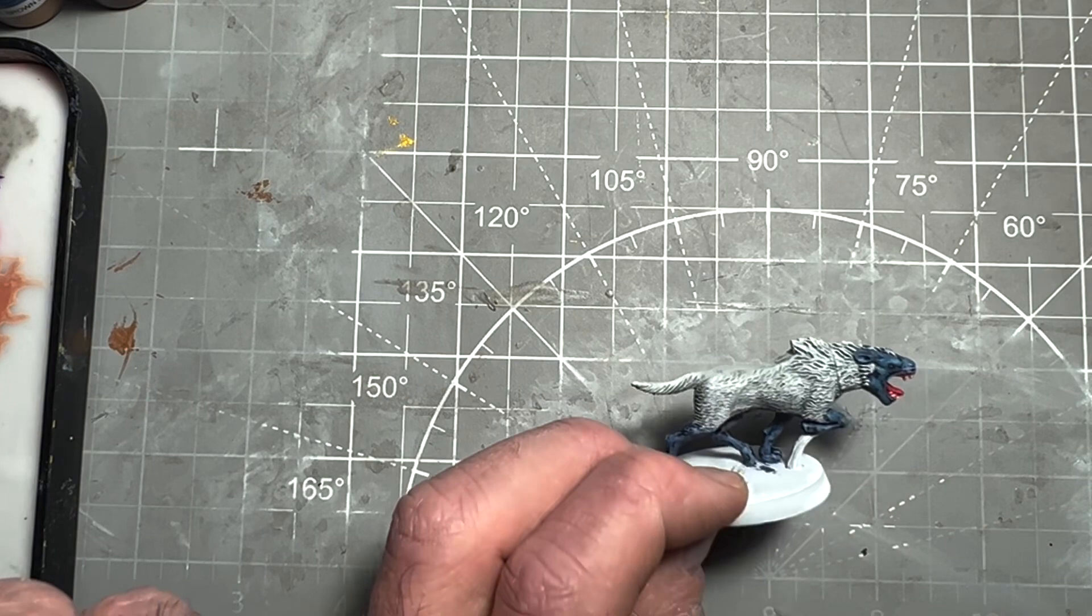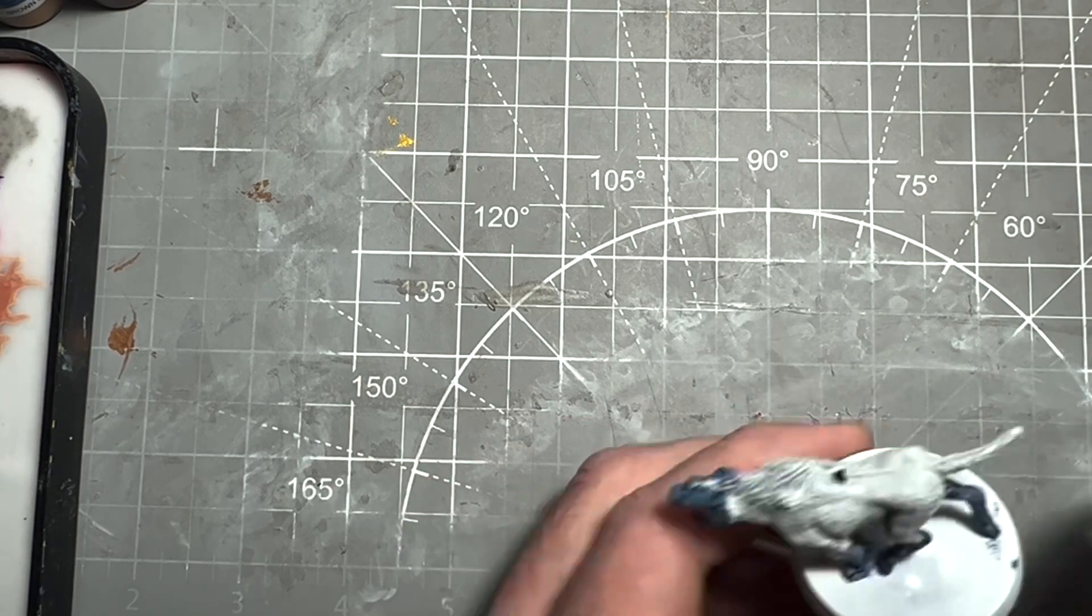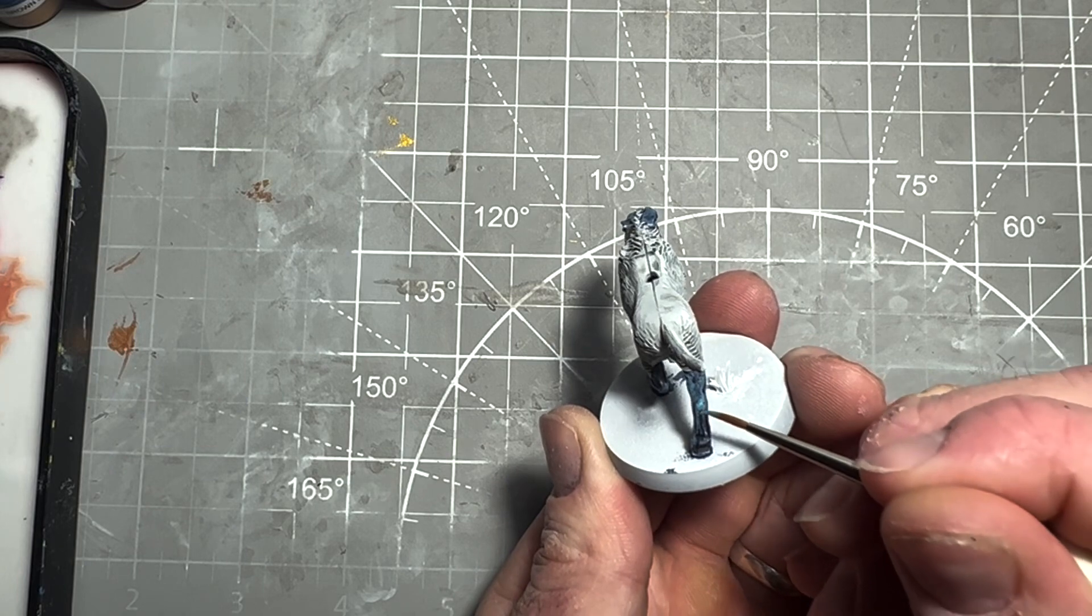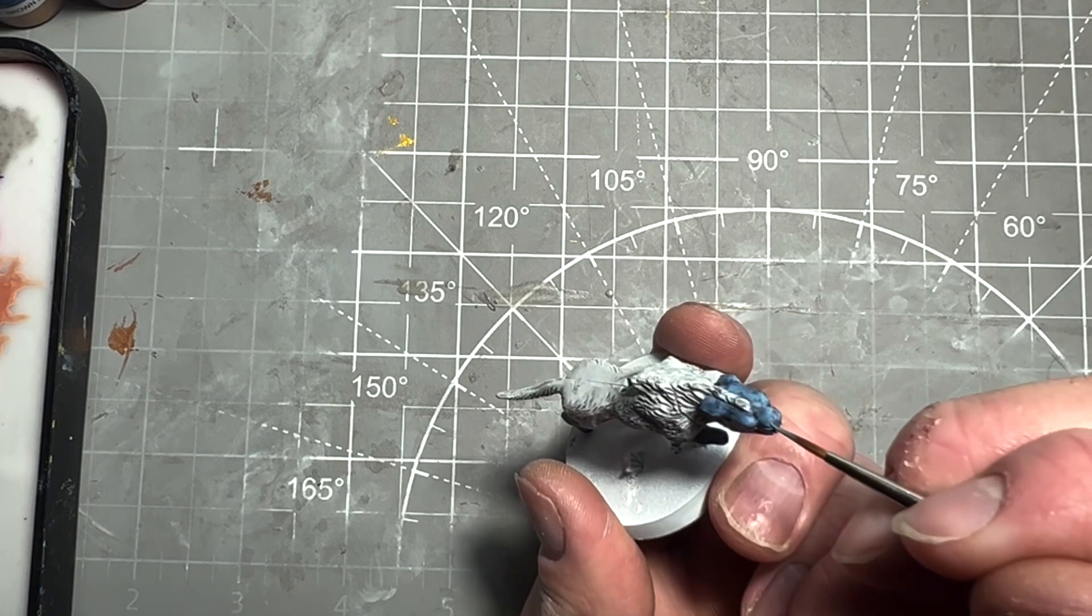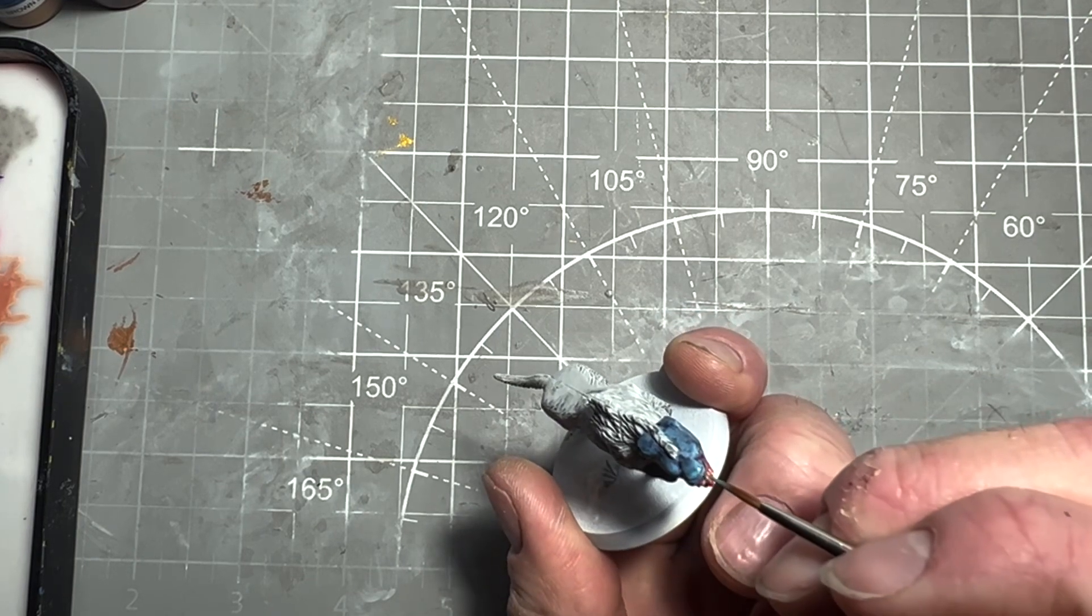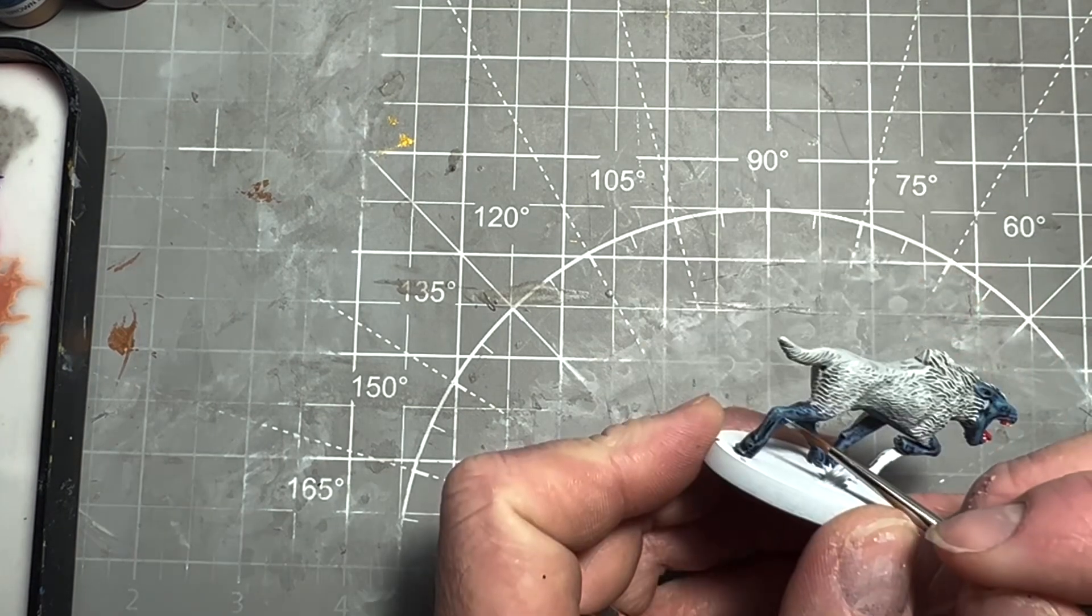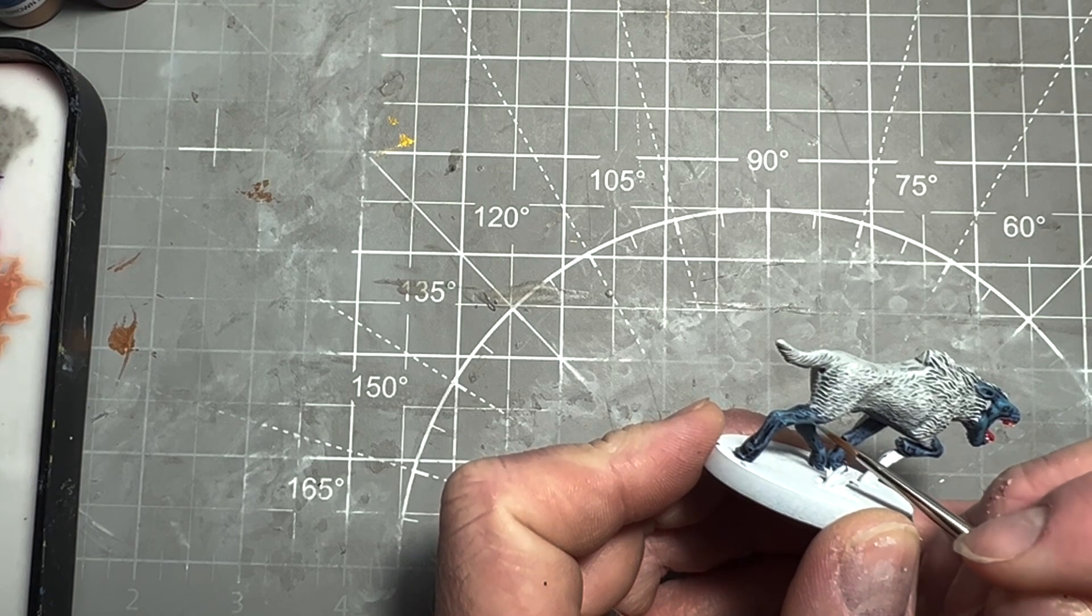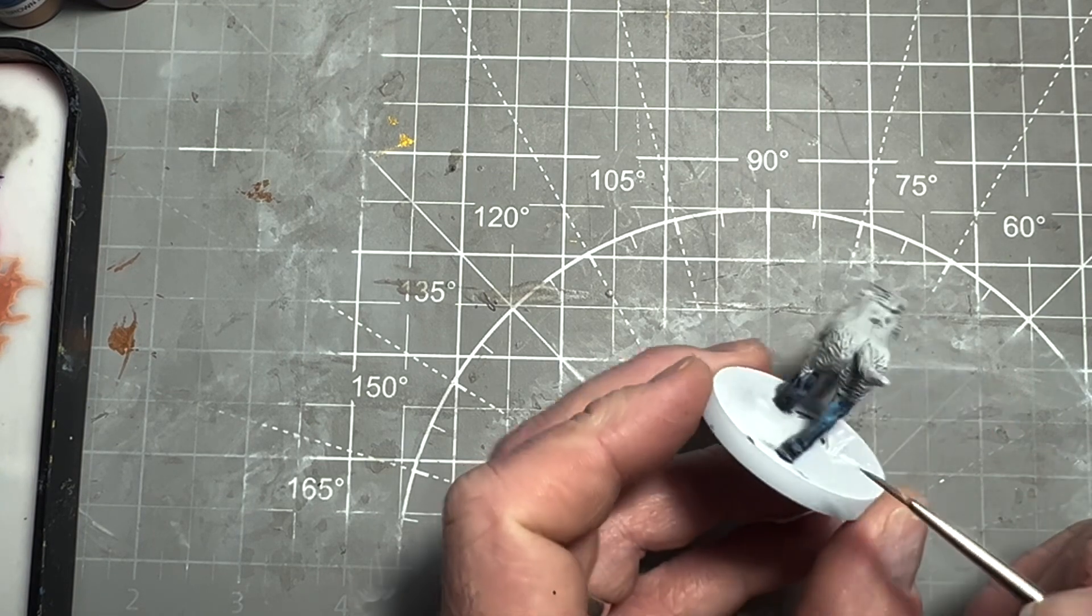The last thing to do is highlight the skin. Take some Hyriel Blue and use the scratchy highlight technique from the Mordor Warg, hitting the high areas around the gums, tops of the legs, and around the eyes. Once you're happy with the highlights, all this model needs is basing and a black rim.